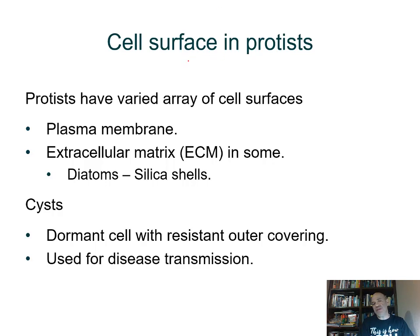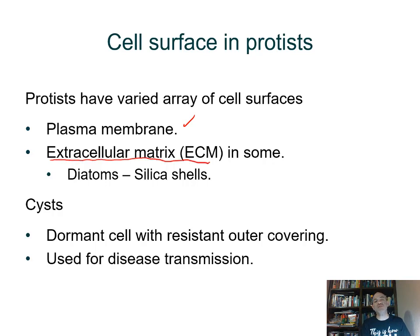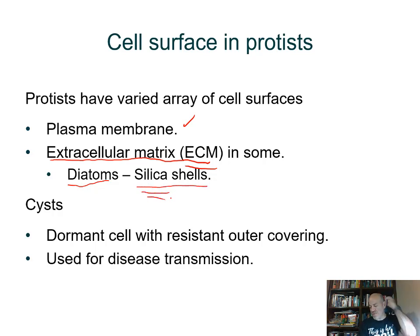The cell surfaces of protists vary, and you may find different structural features on the surface of these organisms, but they all have a plasma membrane. Many produce an extracellular matrix or ECM. For example, diatoms — a photosynthetic group — make a silica shell, and silica or silicate is the same material used to make glass, so they have glass shells.